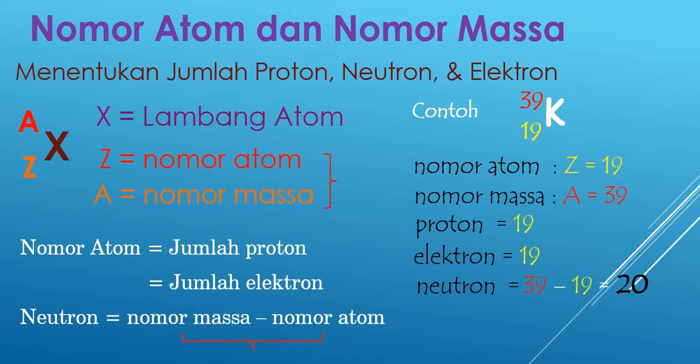Dengan demikian, atom kalium memiliki jumlah proton 19, jumlah elektron 19, dan jumlah neutron 20.